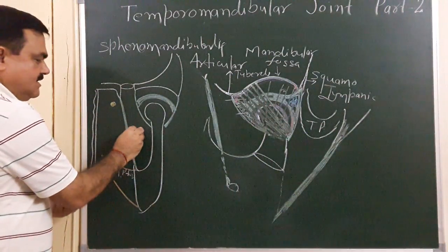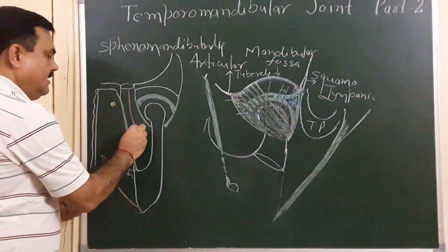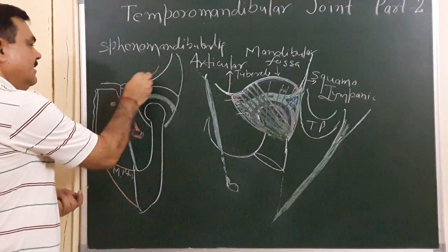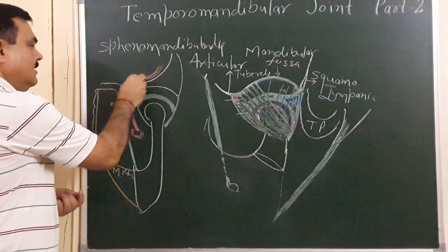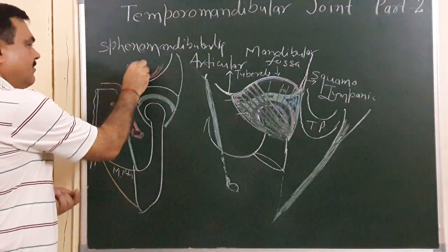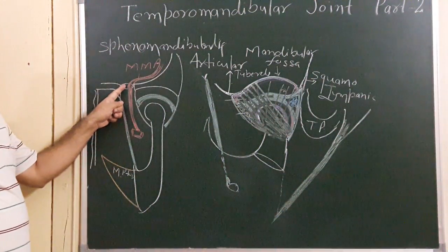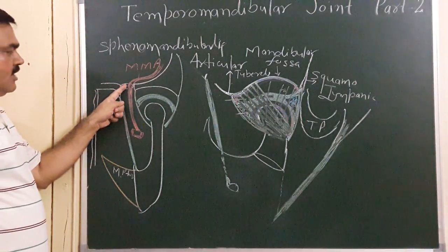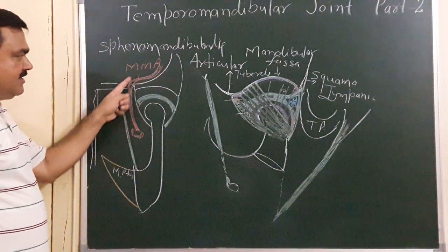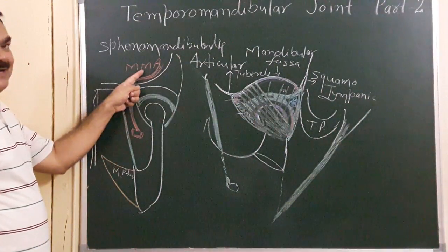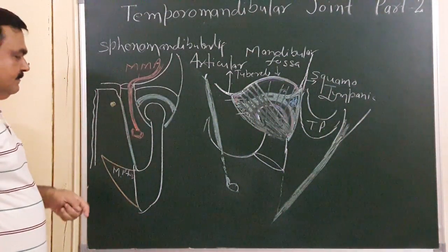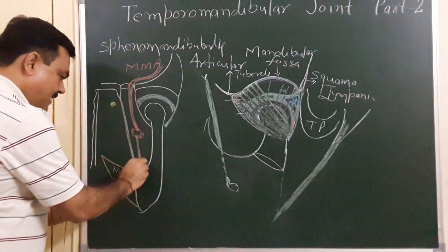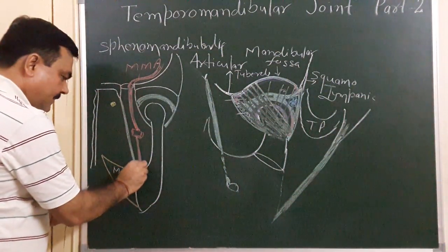This is the maxillary artery, which gives a branch — the middle meningeal artery. The middle meningeal artery passes through the foramen spinosum, which is near the spine of sphenoid. Through this foramen, the middle meningeal artery passes into the cranial cavity.